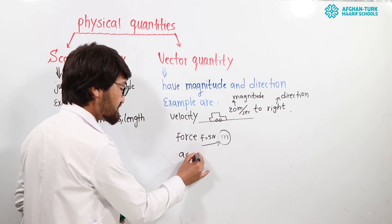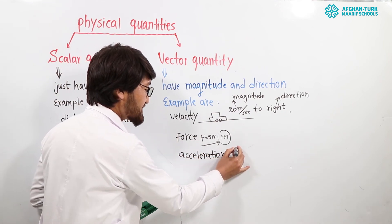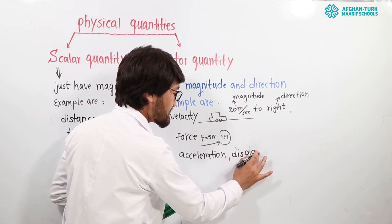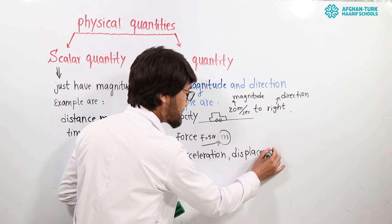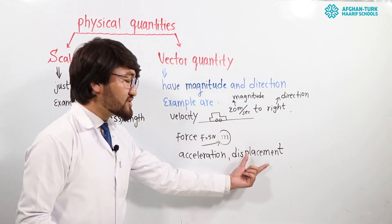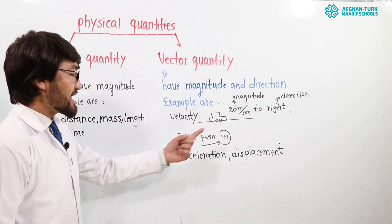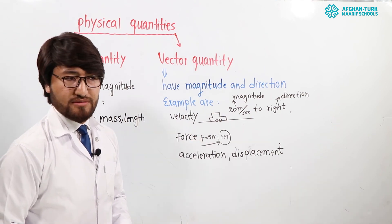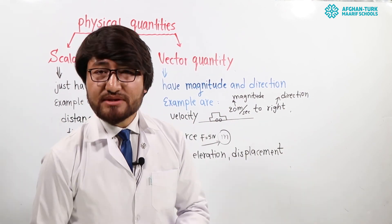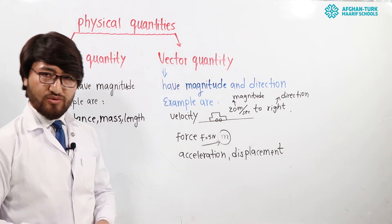Also, in addition to force and velocity, we have acceleration and displacement. These are all vector quantities because they have both magnitude and direction. Do you understand the difference between scalar quantity and vector quantity?